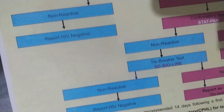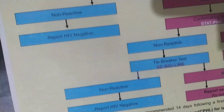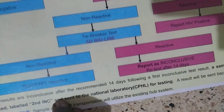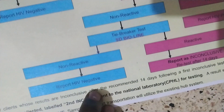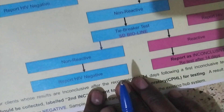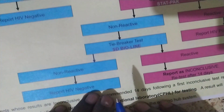To summarize: we start with Determine. If positive, we go to the confirmatory test with STATPAC. If STATPAC is positive, we record positive. If STATPAC is negative, we do the tiebreaker test using SD Bioline. If SD Bioline is reactive, the result is inconclusive and the person is retested after 14 days. If inconclusive again, the sample is taken to the national laboratory, where the result will come back either positive or negative.